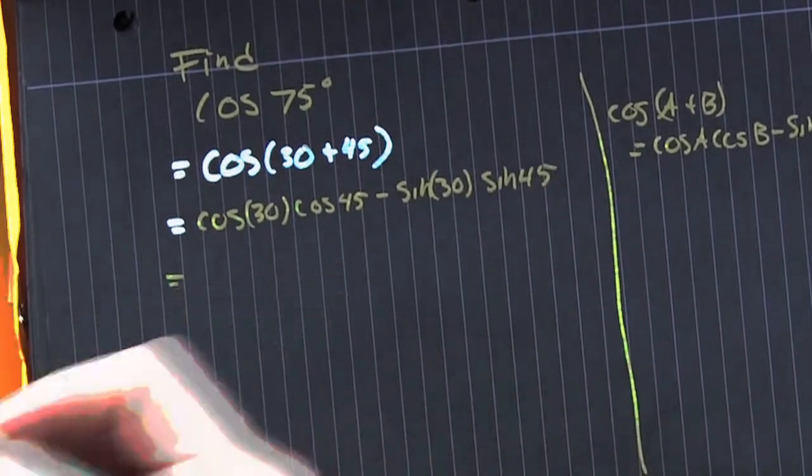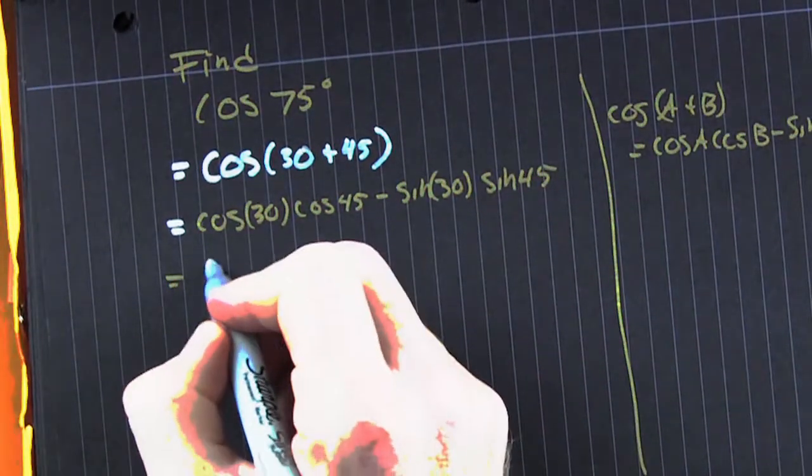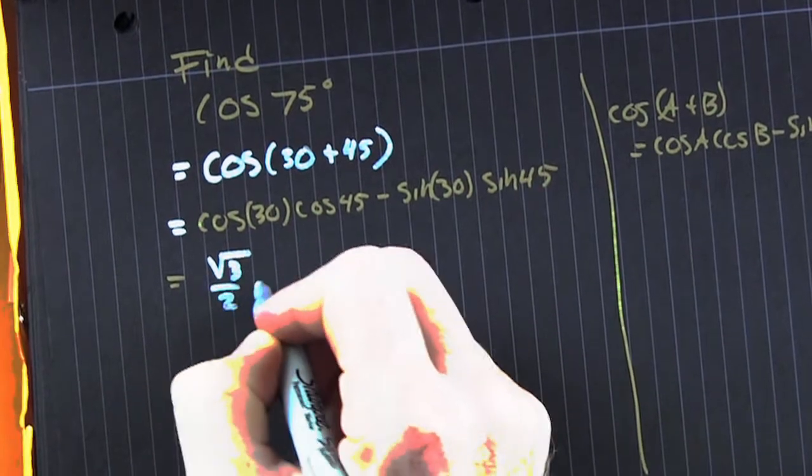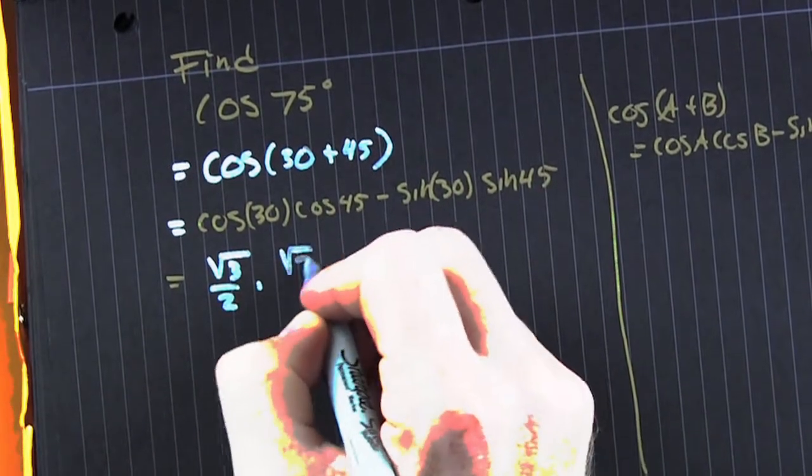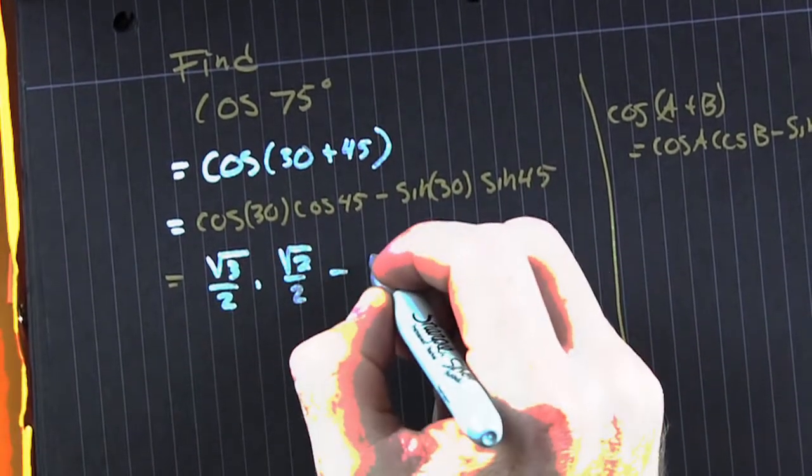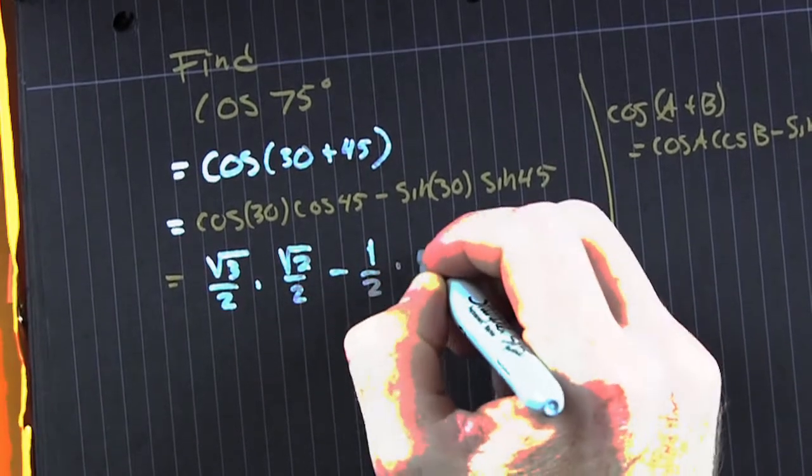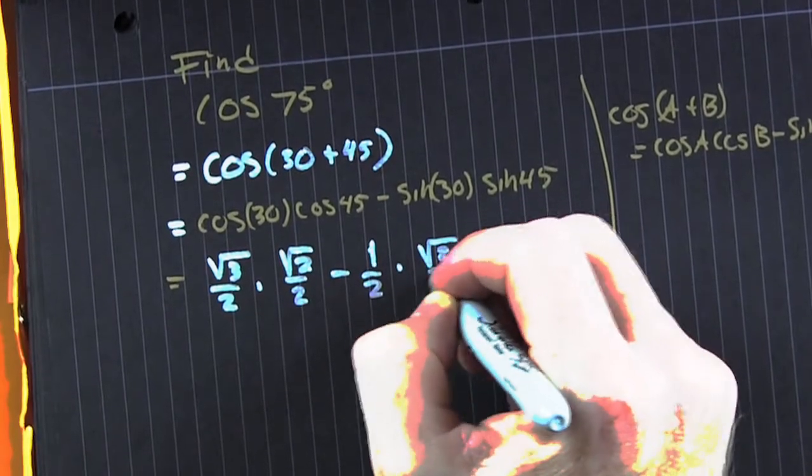Now it's about the evaluation. The cosine of 30 happens to be the root 3 over 2. Cosine of 45, root 2 over 2. The sine of 30 and then the sine of 45.